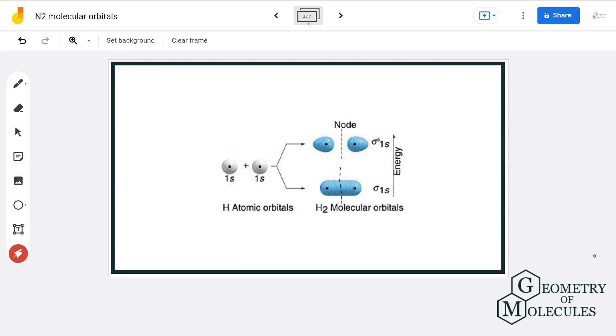For example, in hydrogen molecule each hydrogen atom has one s orbital. When two hydrogen atoms combine or bond, two molecular orbitals will be formed: one will be bonding and the other will be anti-bonding molecular orbital.